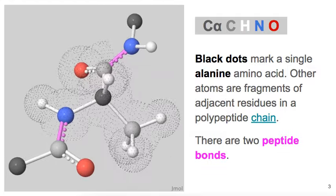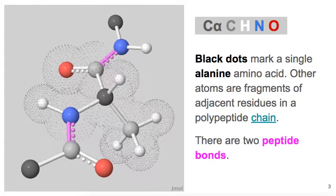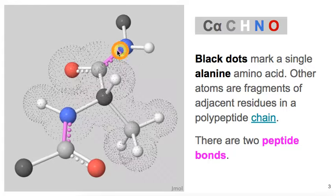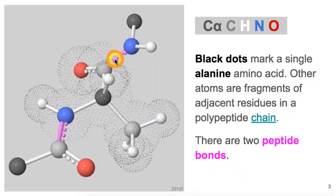The central alanine is connected to these other two amino acids by the two peptide bonds that are shown in magenta.